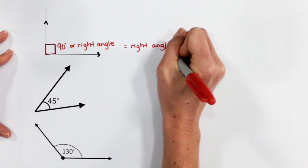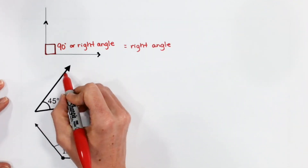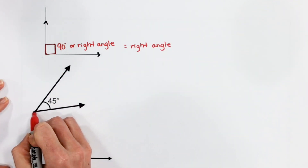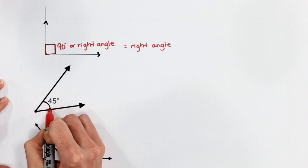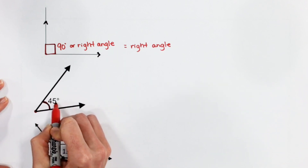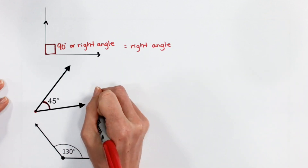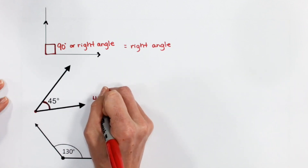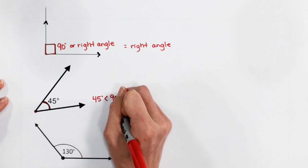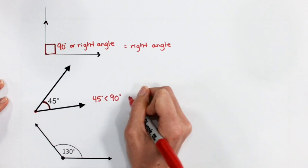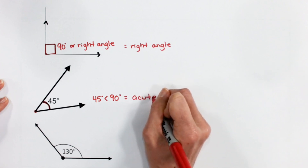Let's look at our next example. Here I have a ray and another ray that meet at an endpoint. This time, they show us that this angle is 45 degrees. Now, 45 degrees is less than our 90 degree angle, so this would be considered an acute angle.